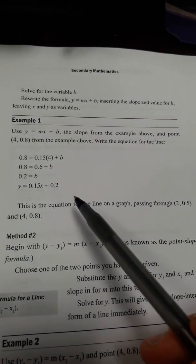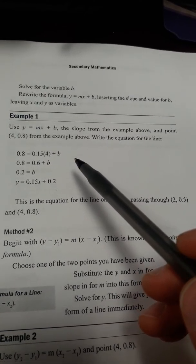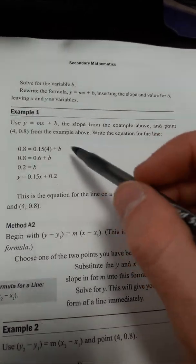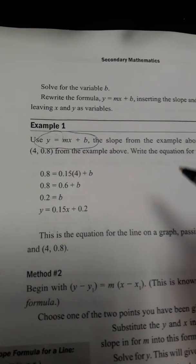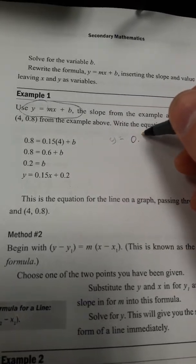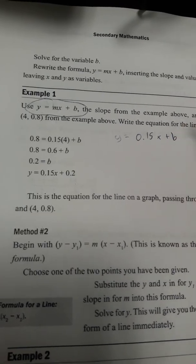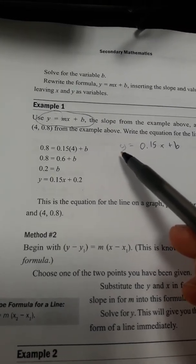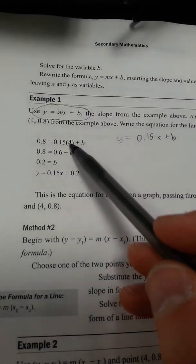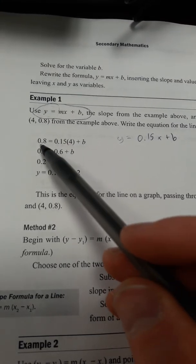Here is how we're going to do it with example one. We'll use one of the points and the slope. Using y equals mx plus b, we know the slope m is 0.15. So I start with y equals 0.15 times x plus b. Now we need to know b to find our equation. We know that at 4 minutes of kayaking, they went 0.8 miles.